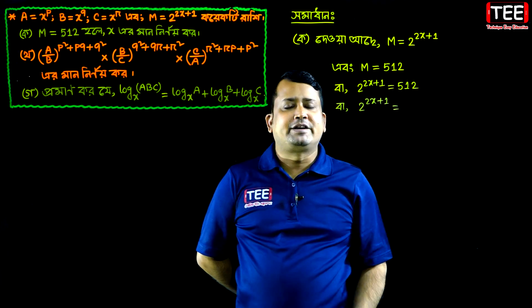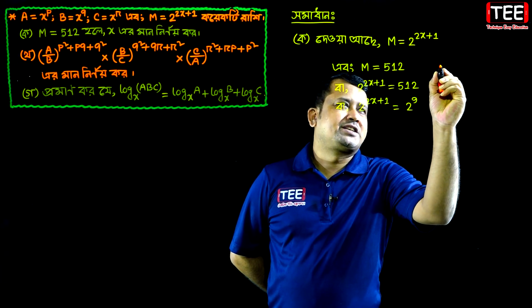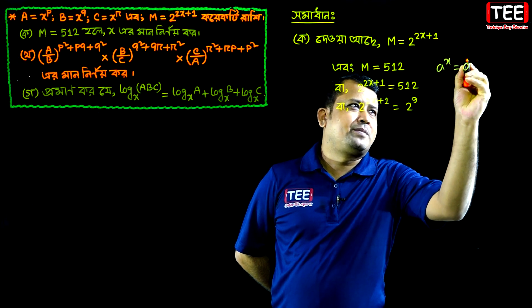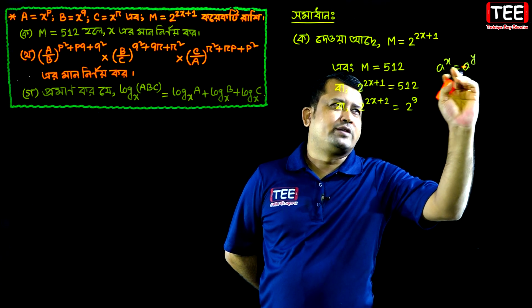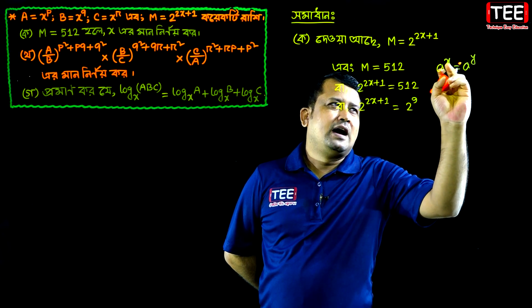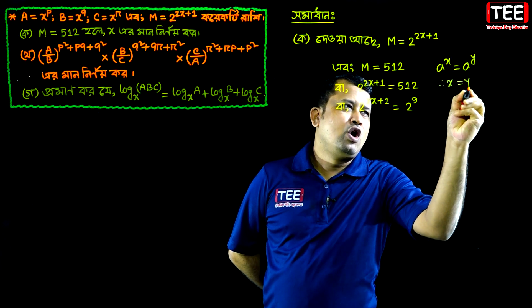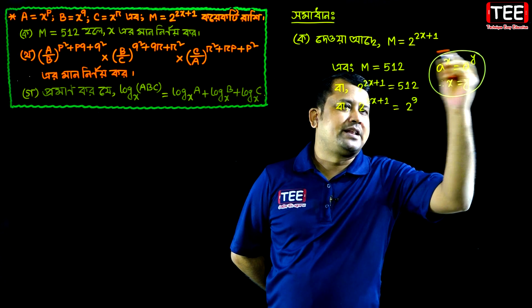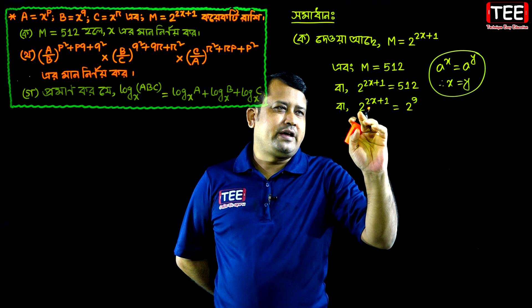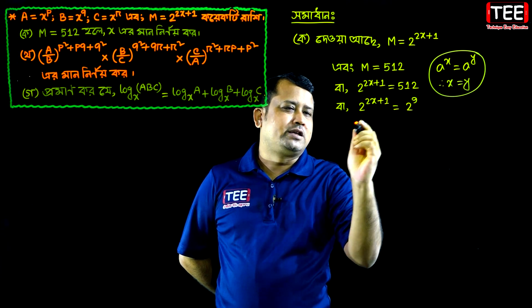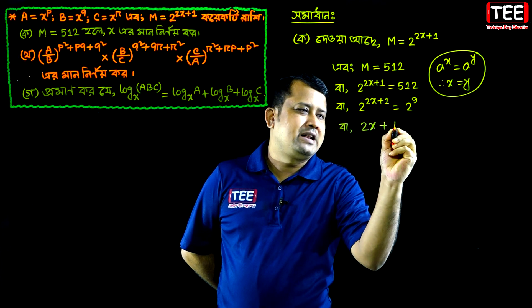2 to the power of the sustainable power minus 1 equal to 512. 2 to the power of the sustainable power. 2x plus 1 equal to 9.